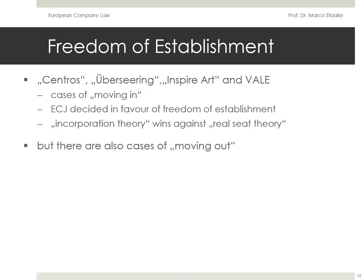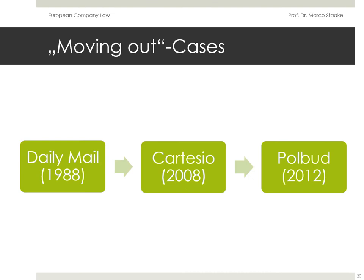Now we have taken a look at the leading moving-in cases. We have seen that the ECJ has greatly promoted the freedom of establishment and fostered mobility of companies within Europe. It established the prevalence of the incorporation theory over the real seat theory — a company established under a member state's legal system has to be recognized by other member states without losing its legal capacity. Now we turn to the leading moving-out cases, which represent the other side of the coin: how does the home member state deal with situations in which a company established under its legal system moves to another jurisdiction? The main issue here was for a long time whether these questions fall within the scope of European law or if it is a purely domestic matter.